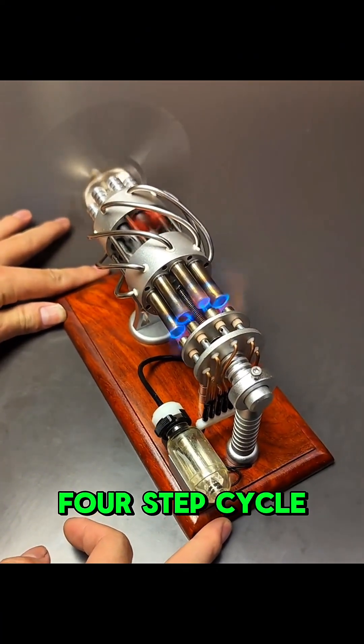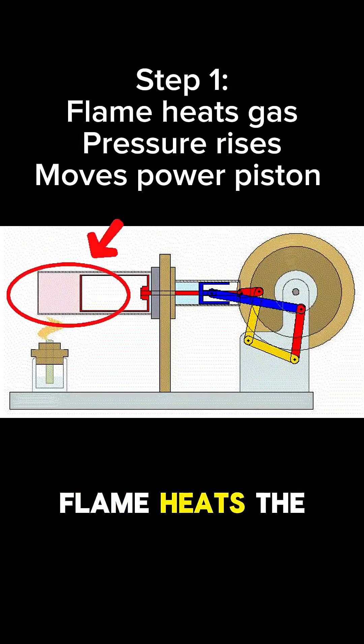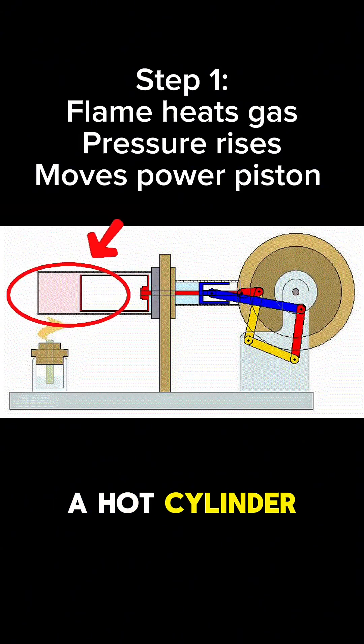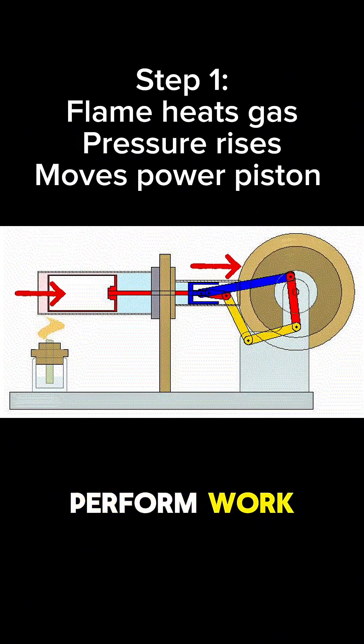A Stirling engine works in a four-step cycle. Step one: heating and expansion. A heat source such as a flame heats the gas inside of a hot cylinder. This gas heats up and creates an increase of pressure which forces a power piston to perform work.